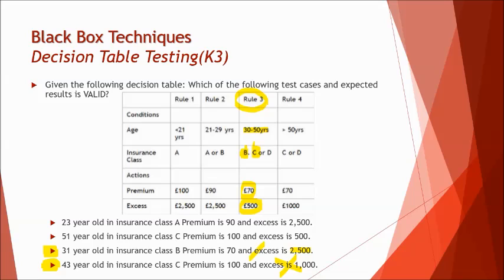Now let's look at option B. Age is 51 here, where that means it falls under the rule four, greater than 50 years. So we have 51 year old here in the insurance class C, that's true, and the premium is 100. No, that's wrong here, it is 70, and the excess is 500, and that's also wrong, it is thousand here. So even option B is wrong.